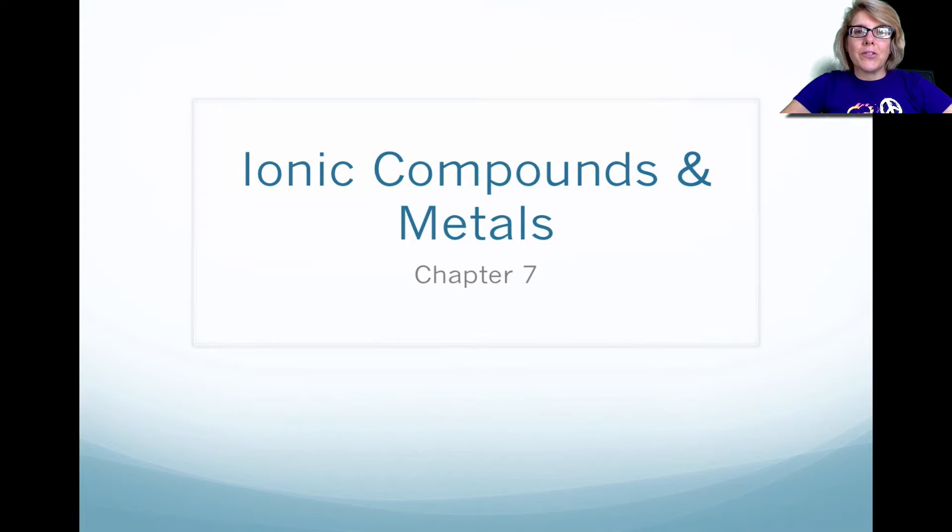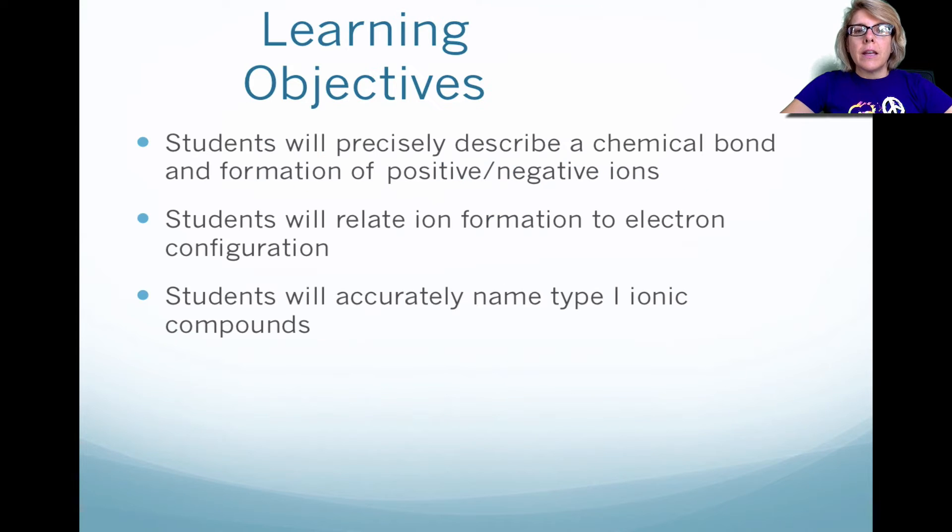Hi, this is Mrs. Verbel. This is Chapter 7, Ionic Compounds and Metals, Part 1. In this video, we're going to look at what is a chemical bond and how do we form positive or negative ions. Then we're going to look at ion formation and electron configuration. And then lastly, we're going to look at type 1 ionic compounds.